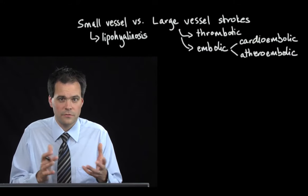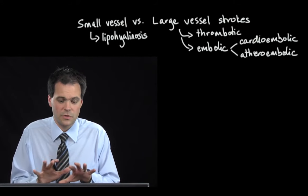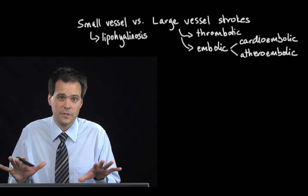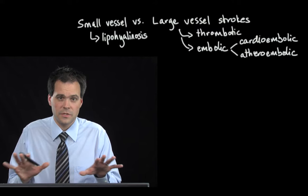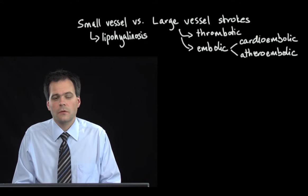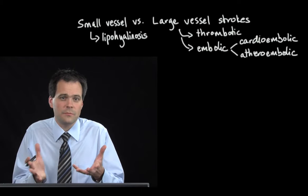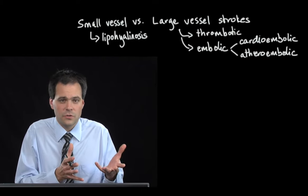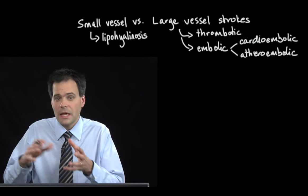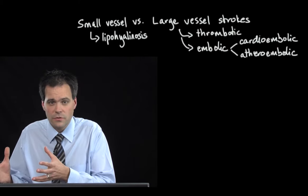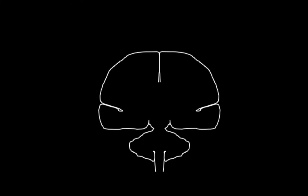The workup for small vessel versus large vessel strokes ends up being a little bit different because of these different mechanisms. One way we clinically differentiate between small vessel and large vessel strokes is by the parts of the body that are involved.